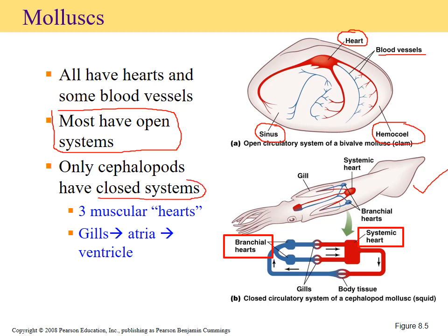I said most molluscs have an open circulatory system because when we come across more complex organisms like squid and octopus, we actually notice they have a closed system. Their system is quite unique in that when we look at their circulation we come across three different 'hearts' — in quotations because they're really just a muscular chamber that will squeeze and release, causing force to keep blood flowing.